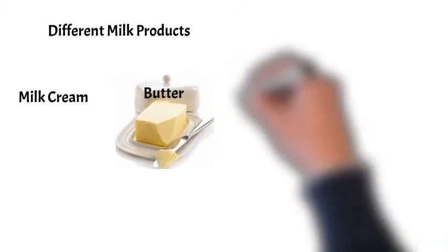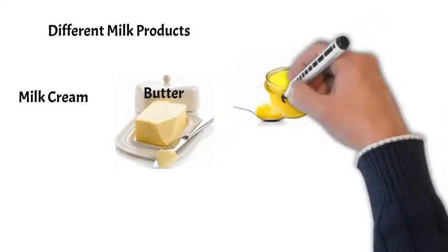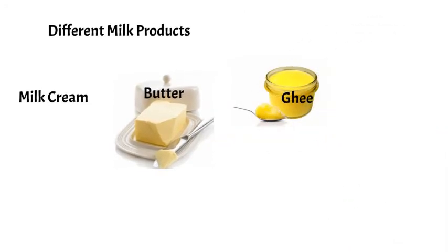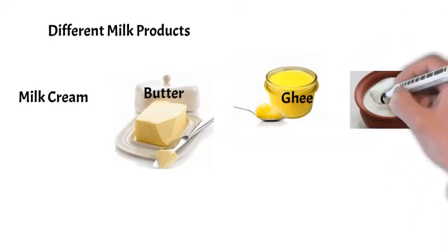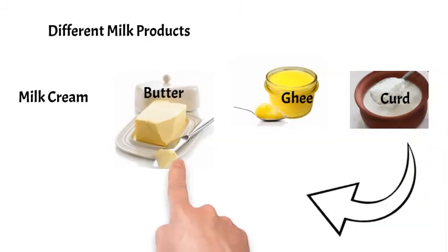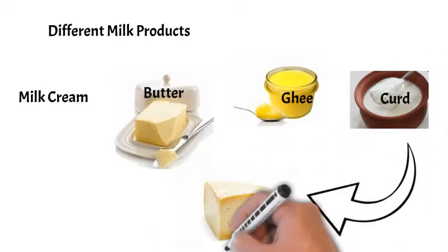Third one is ghee, which is clarified butter. The fourth one is curd, which is basically coagulated milk. Curd can be further processed to produce cheese.